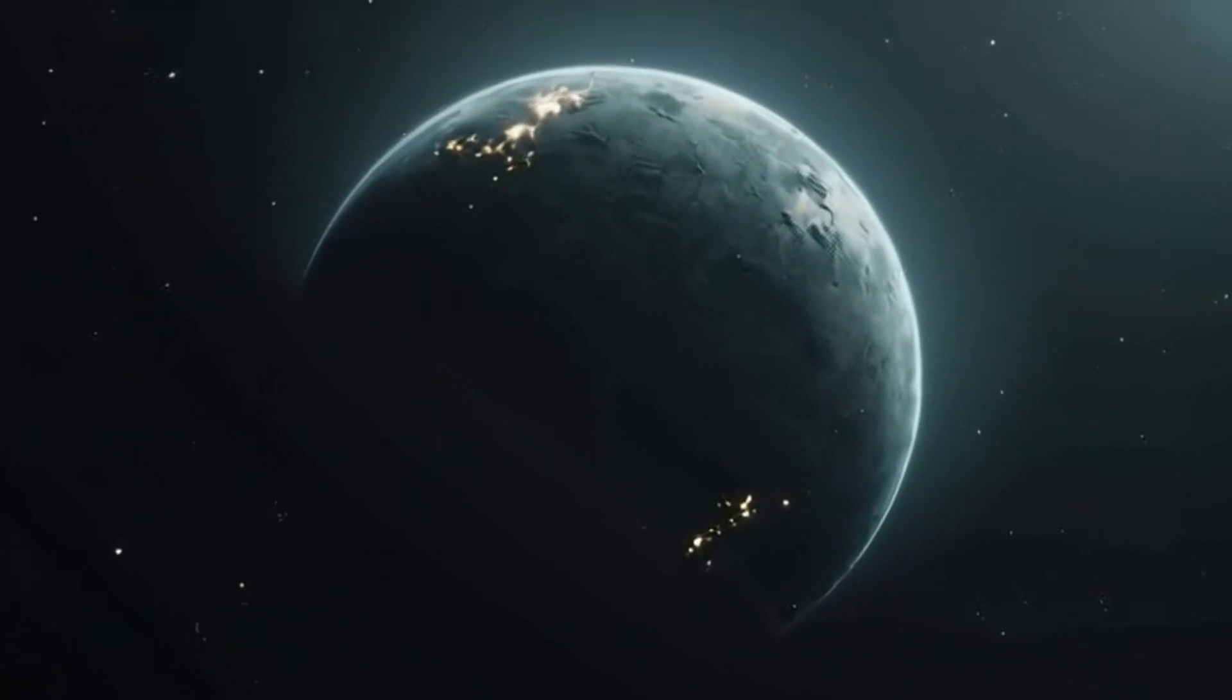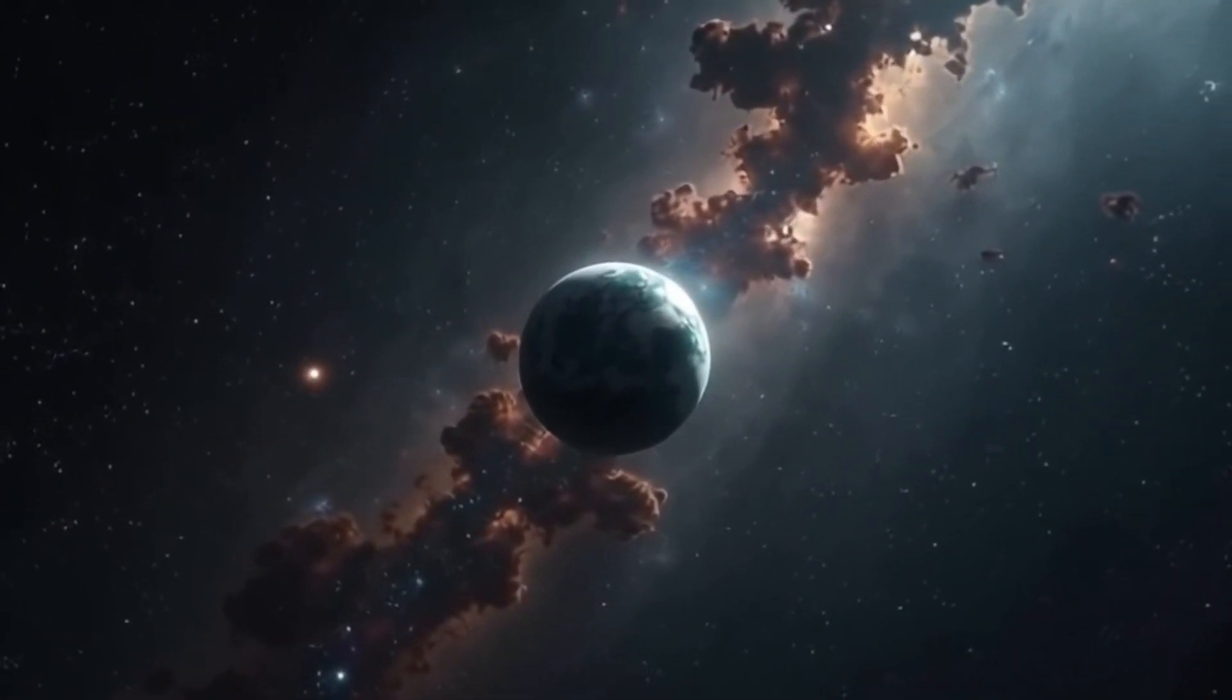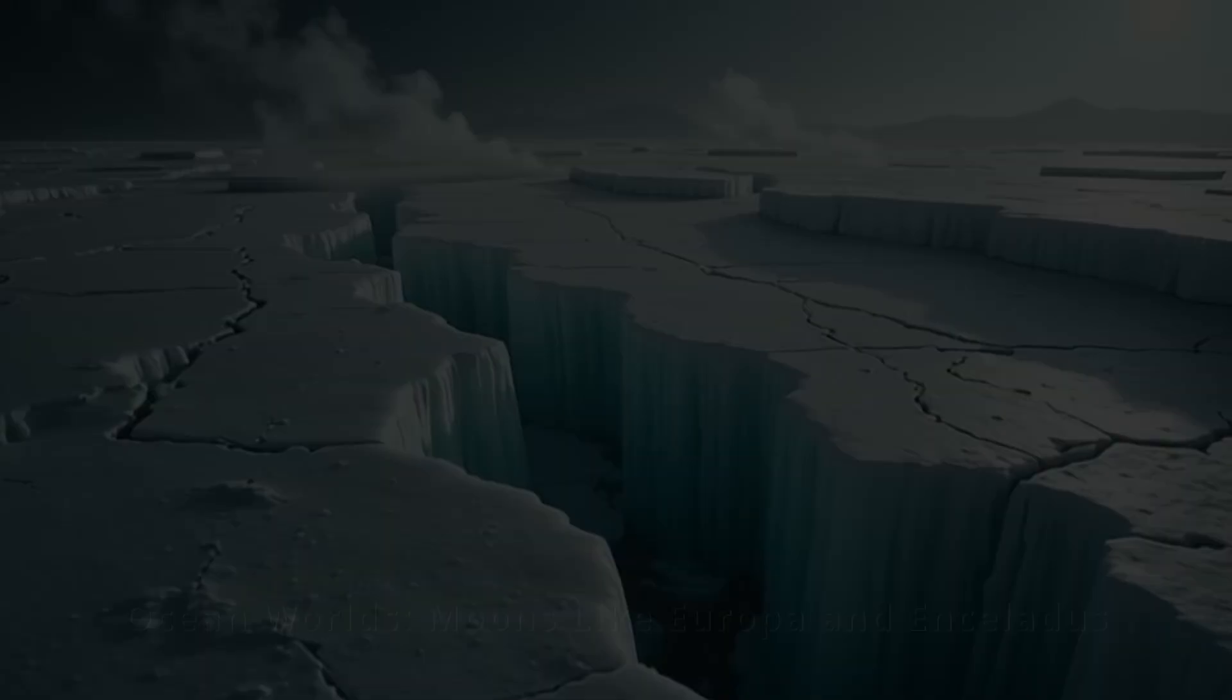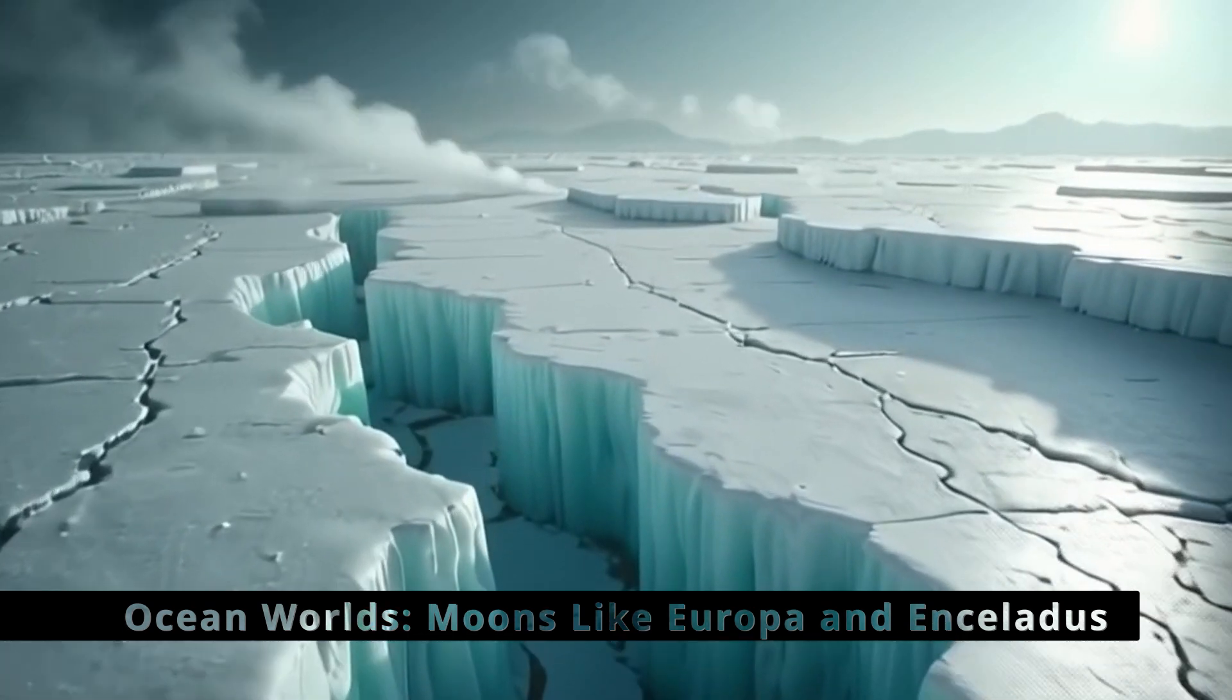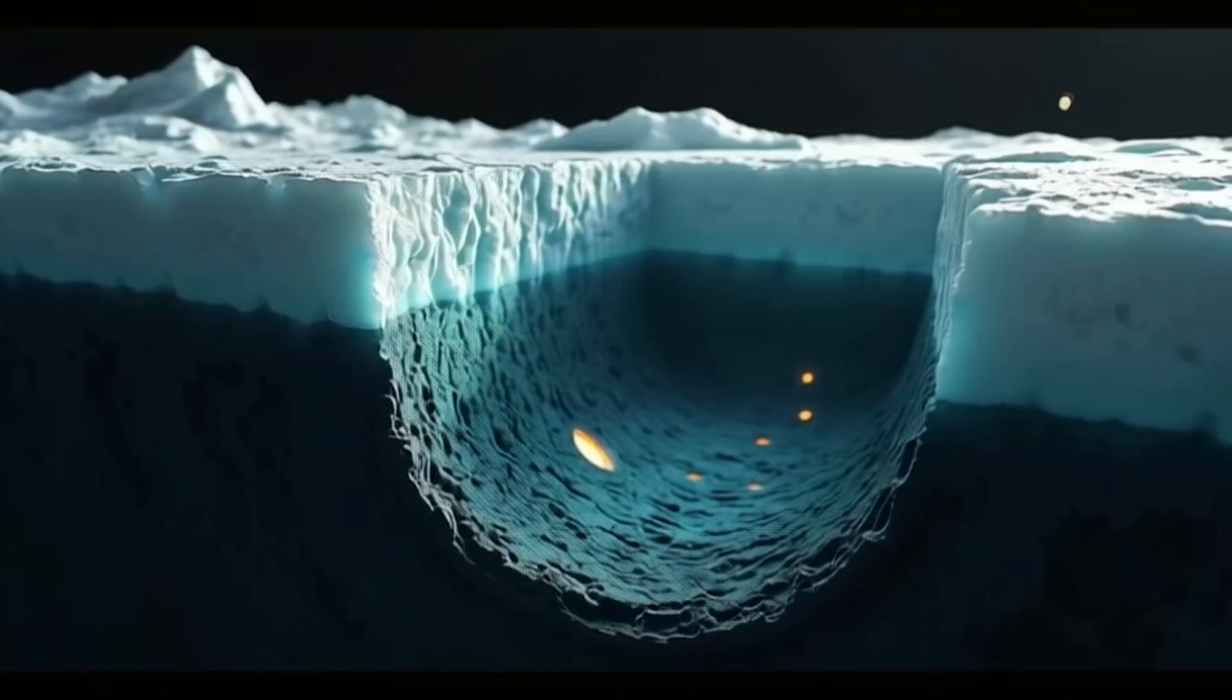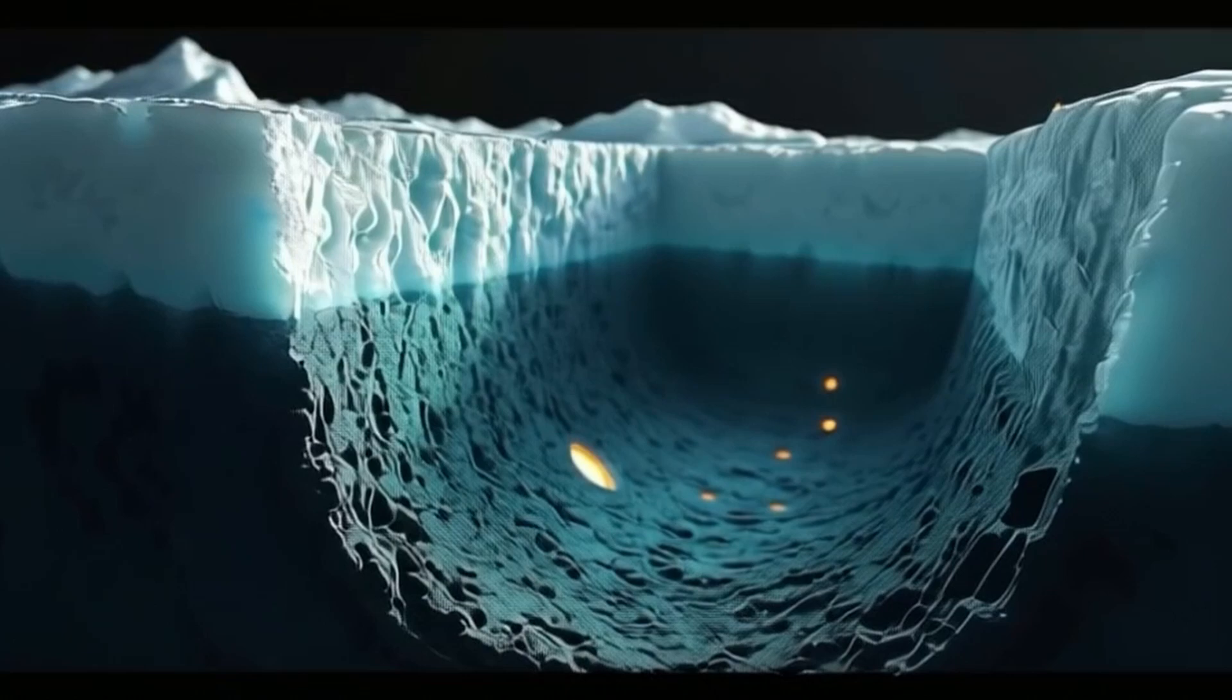Even in the most isolated corners of the cosmos, life finds a way to survive, adapt, and thrive in conditions that defy our understanding. On moons like Europa and Enceladus, thick layers of ice conceal vast oceans, hidden from view but full of potential for life. These oceans, shielded by miles of ice, remain in darkness, but hold the promise of thriving life.